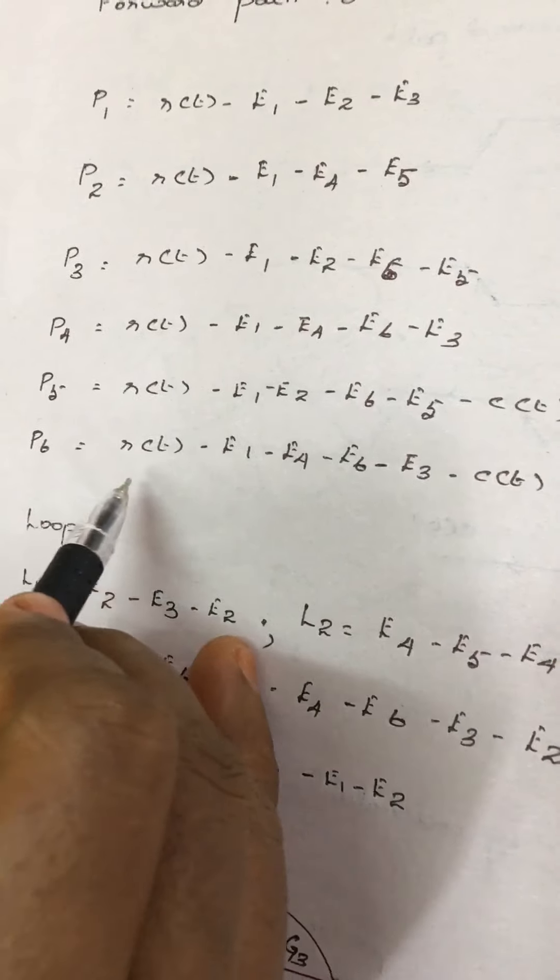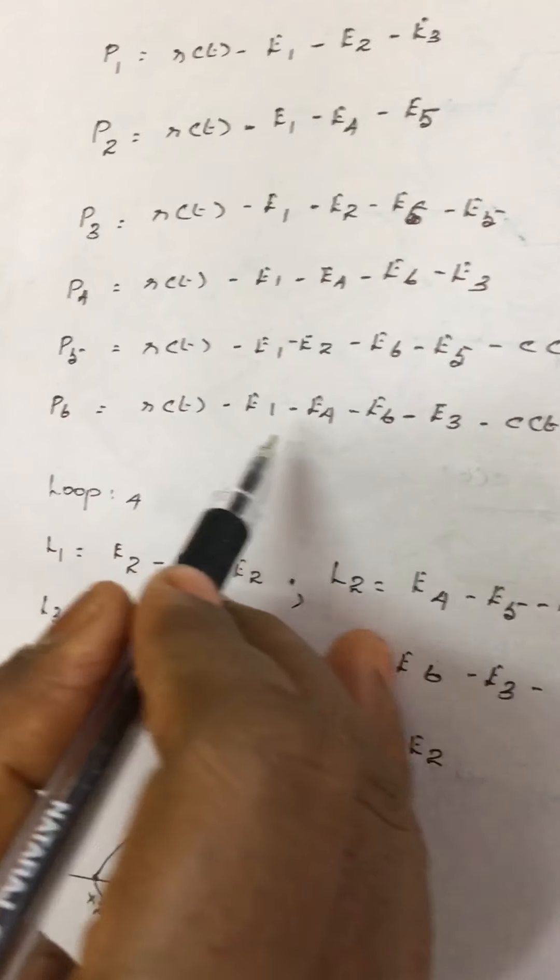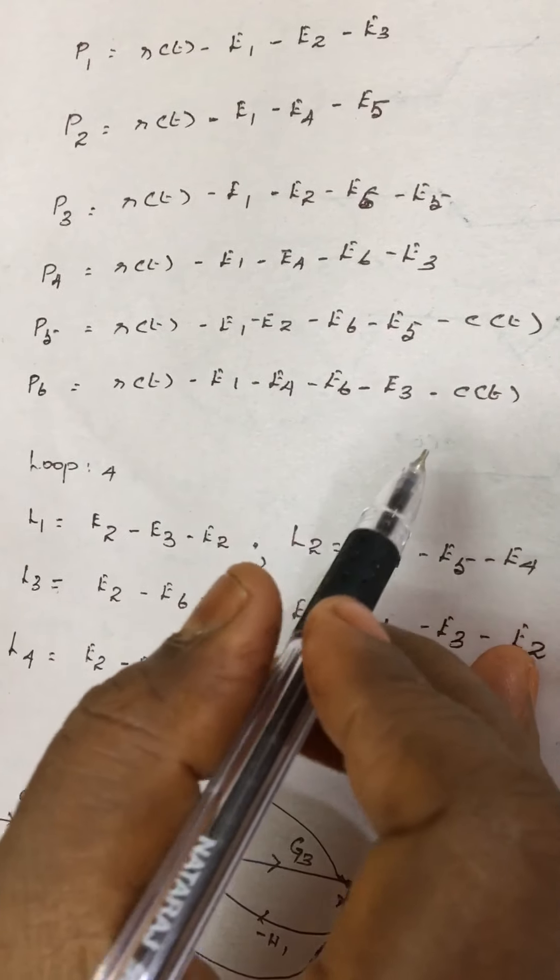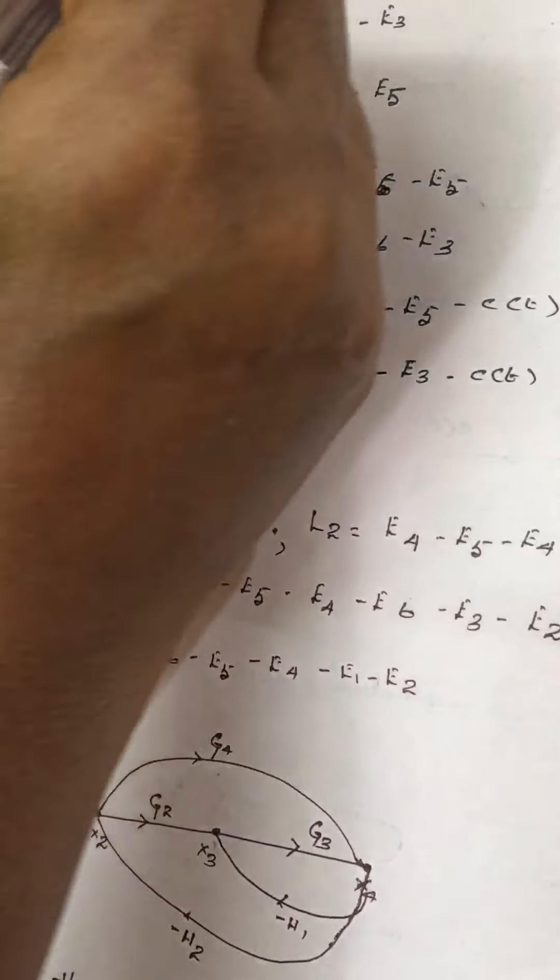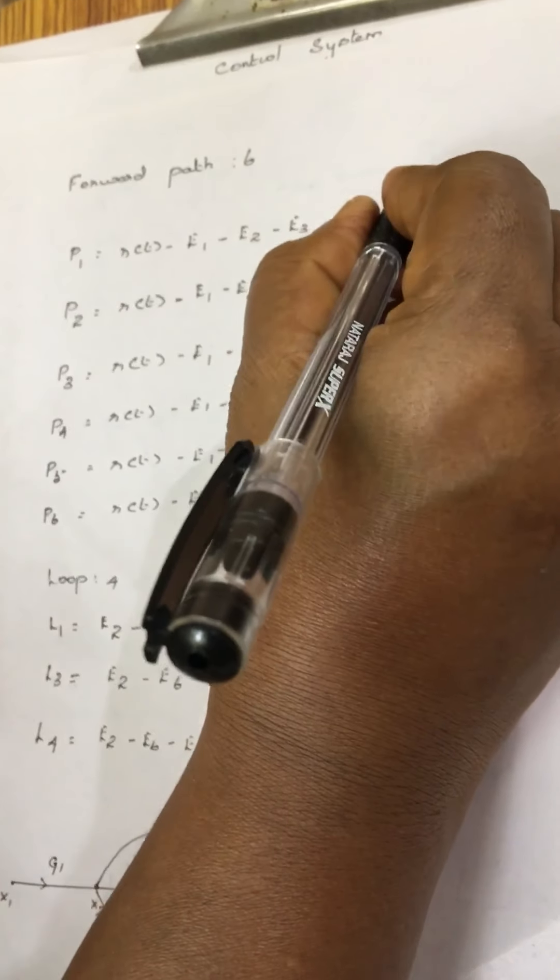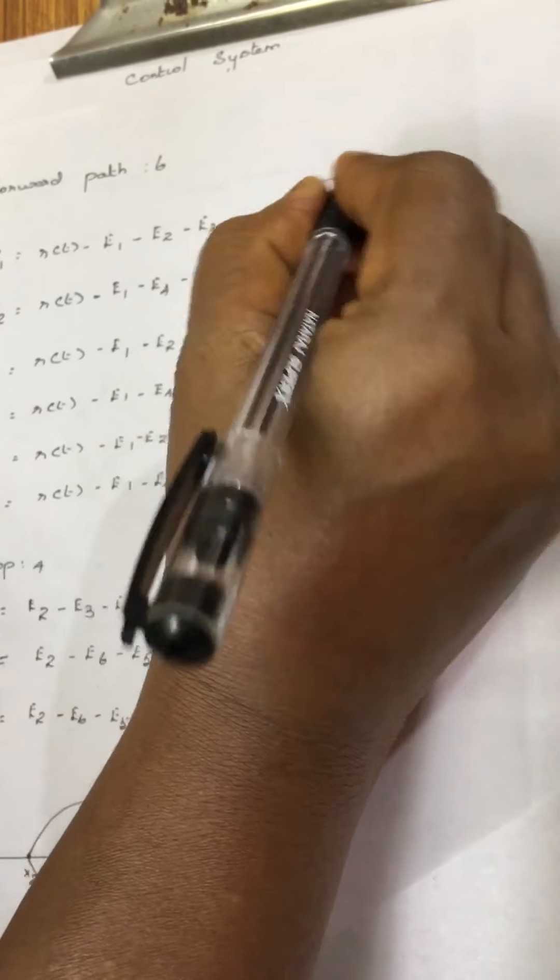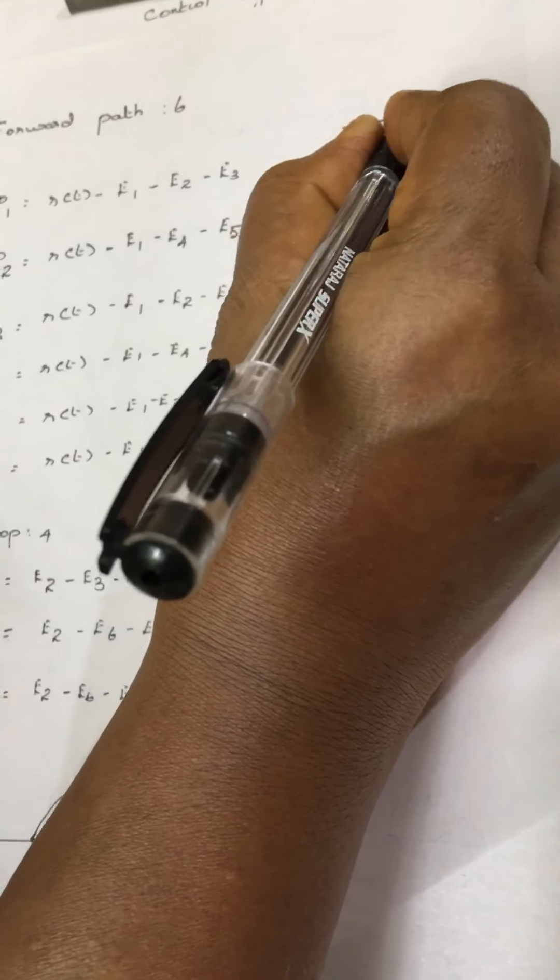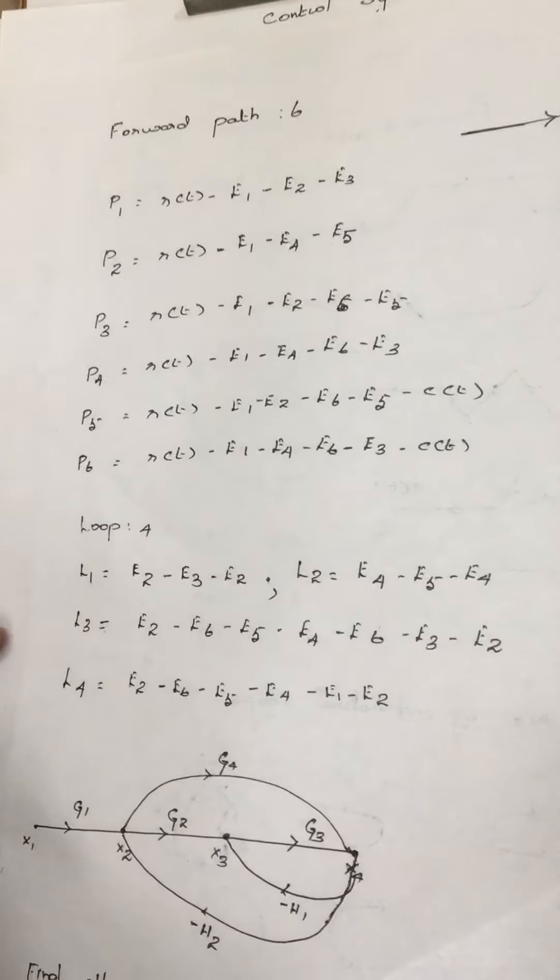P6 equals R of T, E1, E4, E6, E3, and C of T. I repeat once again: what is a forward path? It starts at any node and moves towards any node with an indication of an arrow.